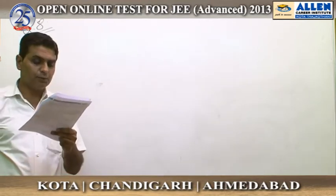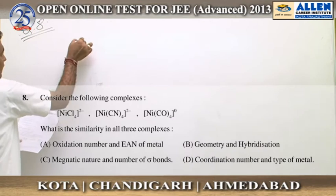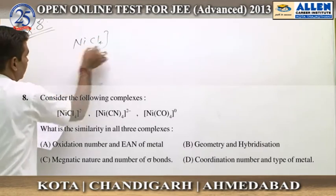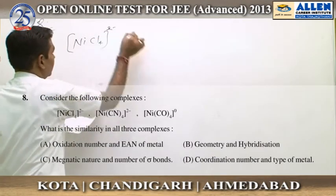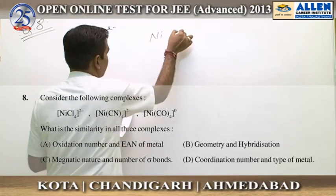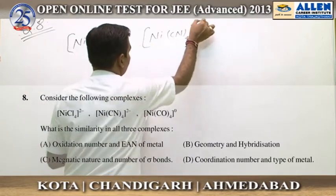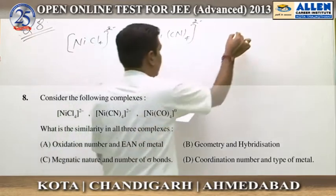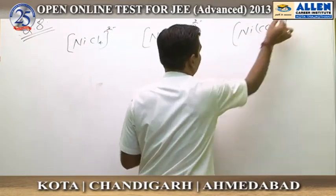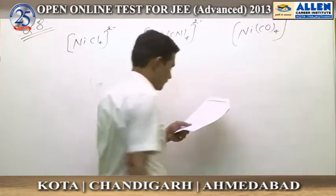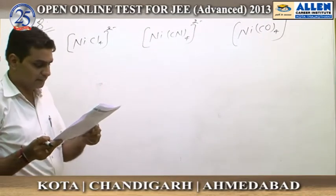Question number 8 is related to coordination chemistry. There are four complexes given: [CrCl(H2O)5]2+, [NiCl4]2−, [Ni(CN)4]2−, and [Ni(CO)4] with net charge zero. The question asks what similarity exists among three of these complexes.